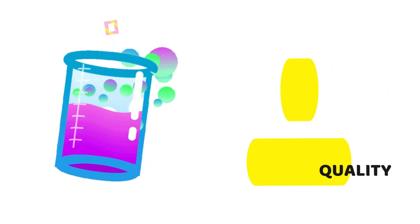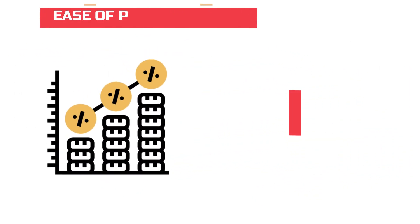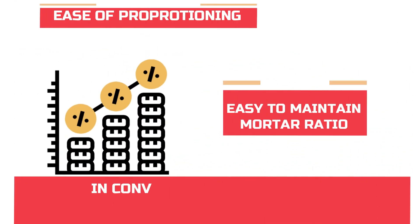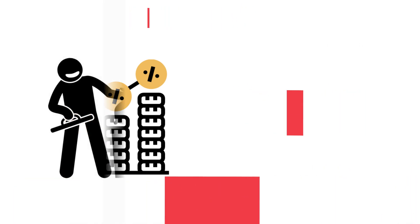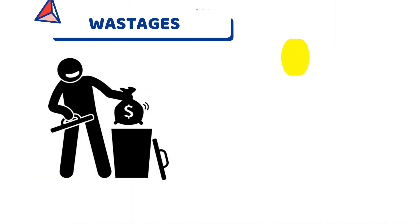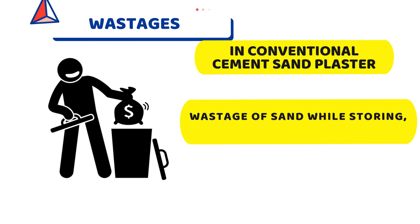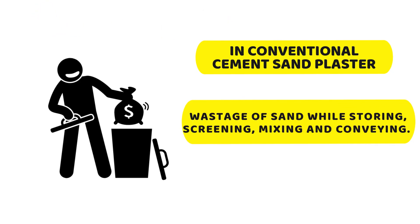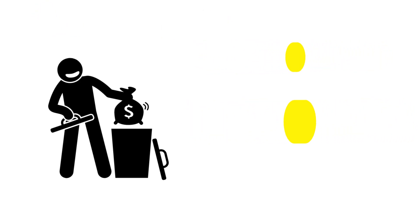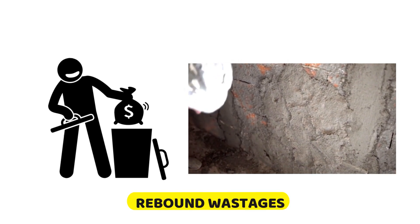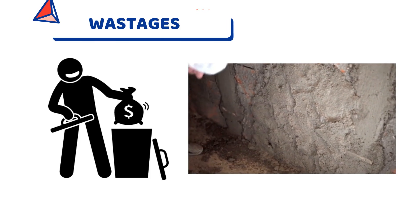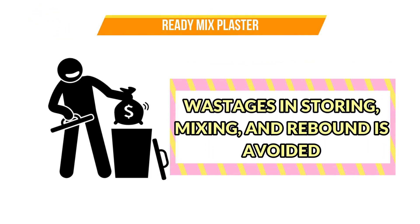Next is ease of proportioning — it is easy to maintain the mortar ratio, whereas in conventional plaster it is very difficult to maintain mix proportion in site mixing. Next is the generation of wastage. In conventional cement plaster, there is wastage of sand during storing, screening, conveying and mixing, and also rebound wastage during application. But in the case of ready mix plaster, there is no wastage in storing, mixing and plastering.